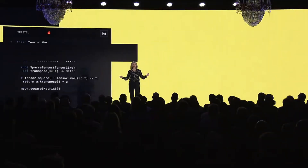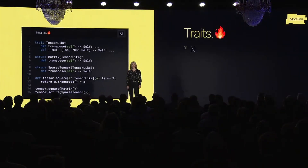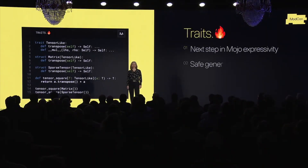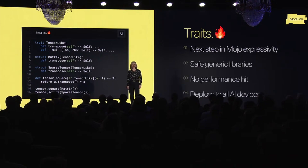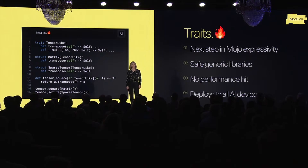Traits. Mojo 0.6 introduces traits, which allow expressing generic algorithms without sacrificing performance. Traits are one example of how we bring proven techniques from languages like Rust to Mojo, enabling Python developers to learn and benefit from modern language technologies.